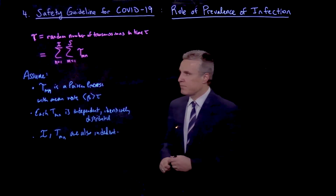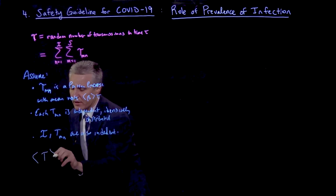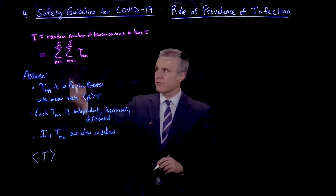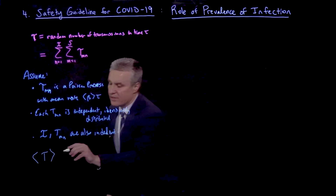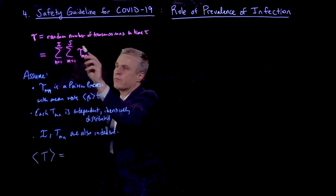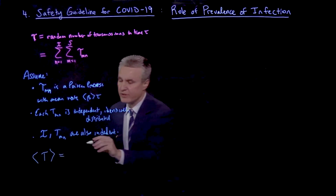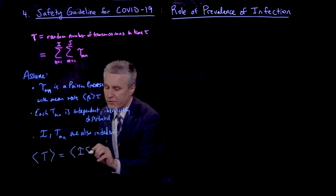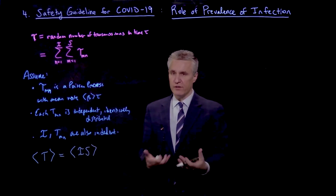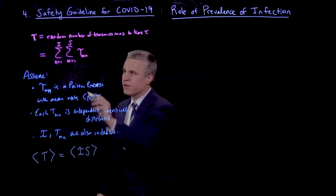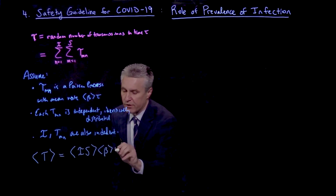And so if we do that, then what we're really interested in is the expected number of transmissions — the expected value of T. If you have a random sum of random variables, and the random number is independent of the variables you're adding up, this would just be the expected total number of pairs, which is I times S, times the expected value of T_mn, which is beta-bar times tau.